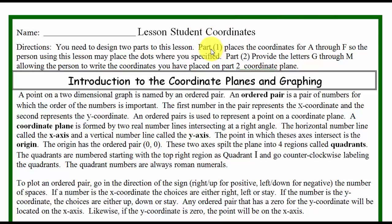This is in two parts: part 1 and part 2. In part 1, you are going to place the coordinates for A through F, so the person using the lesson will find the dots and place the dots where you specify.